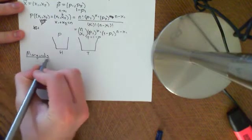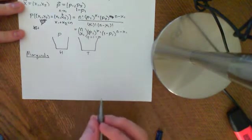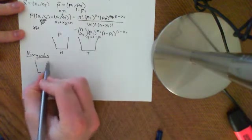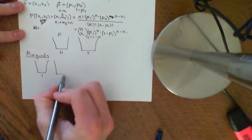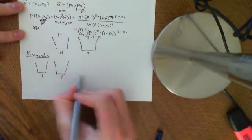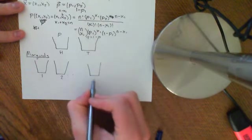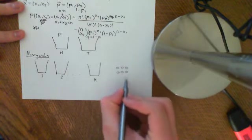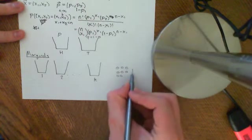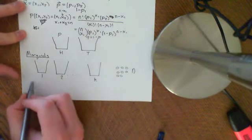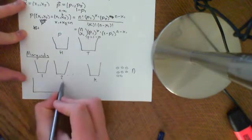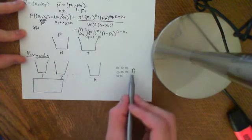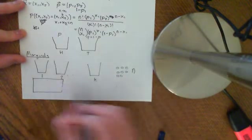Let me just remind you what we had. We had k baskets, all the way down to the kth basket. And then we had n tennis balls, and we had a great big probability distribution which contained every possible outcome of ascribing these n tennis balls into these k baskets.